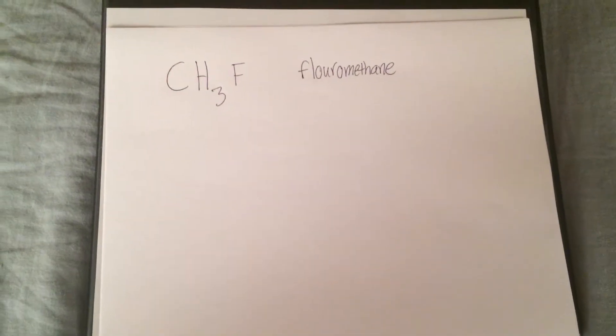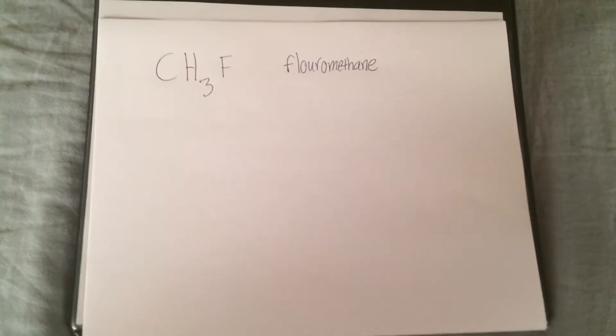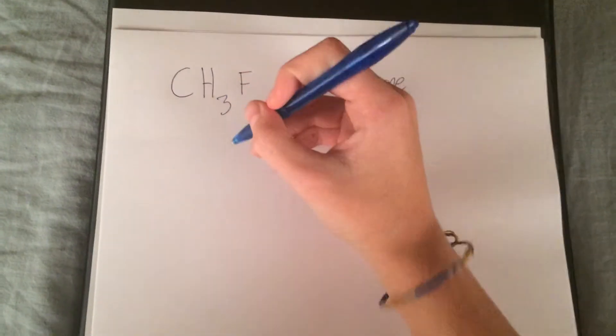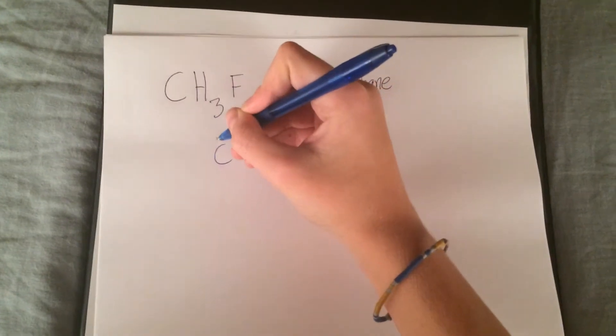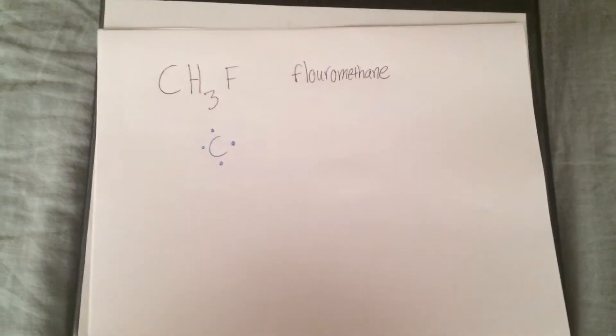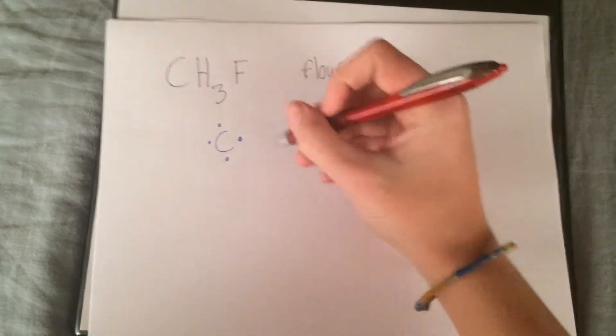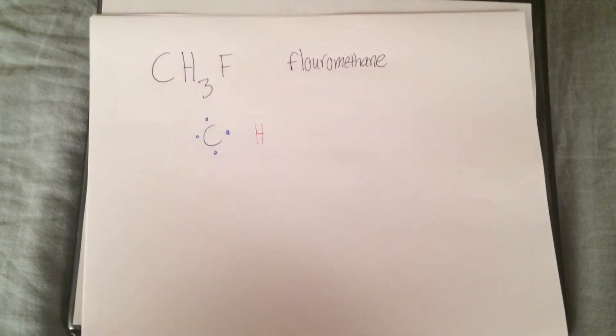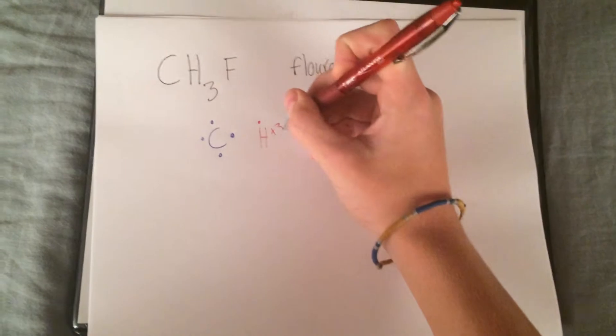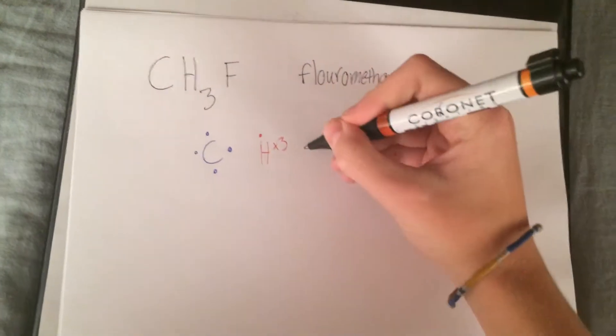To create the Lewis dot diagram of this molecule, you first have to find the correct Lewis dots of each specific atom. For carbon, it is C with four valence electrons, one on each side because it is an irregular atom. For hydrogen, you have one valence electron. There are three hydrogen in this molecule. Fluorine has seven valence electrons.